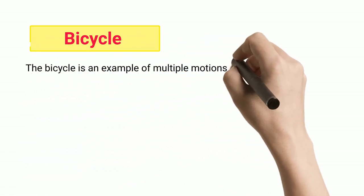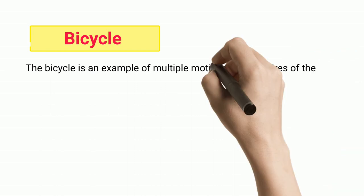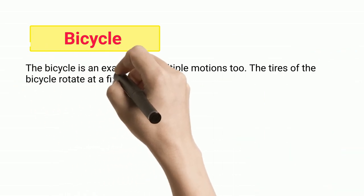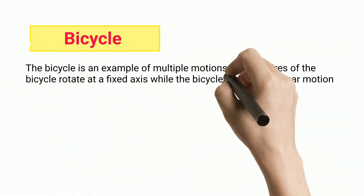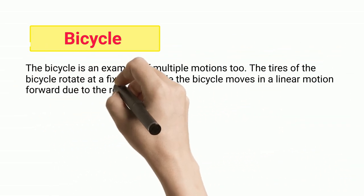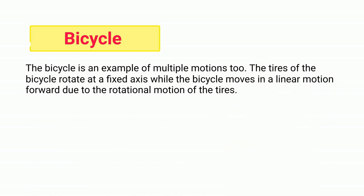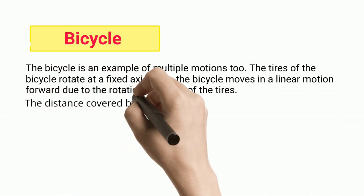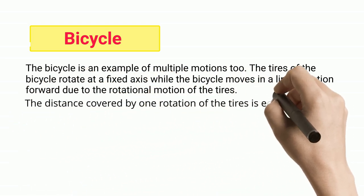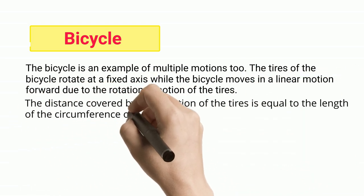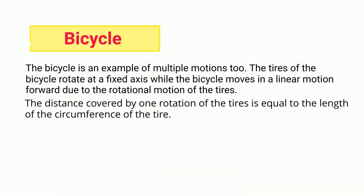Bicycle. The bicycle is an example of multiple motions. The tires of the bicycle rotate at a fixed axis while the bicycle moves in a linear motion forward due to the rotational motion of the tires. The distance covered by one rotation of the tires is equal to the length of the circumference of the tire.